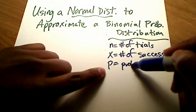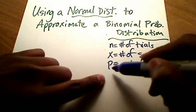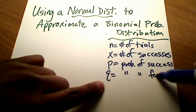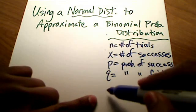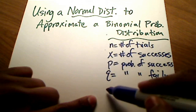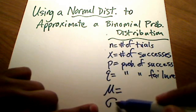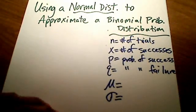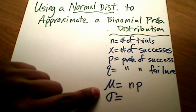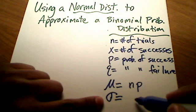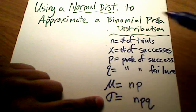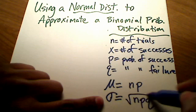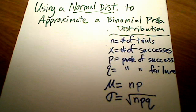I also have little p, which is the probability of success, and its complement little q, the probability of failure. If you know n, x, p, and q, you can find the mean as well as the standard deviation. The mean formula is really simple — it's just n times p. And the standard deviation is the square root of n times p times q.